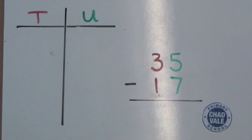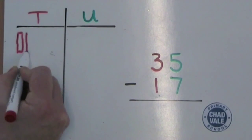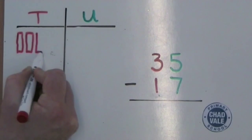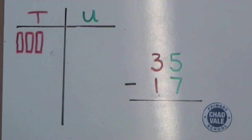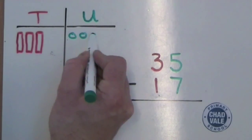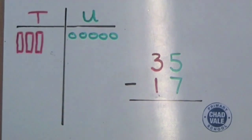Firstly we draw 35, which has three tens and five units. Because we are subtracting, we do not draw the bottom number like we would do for addition.